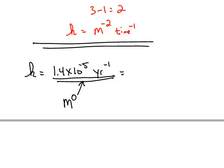So we can rewrite this given rate constant as 1.4 times 10 to the negative 5th molarity to the 0 years to the negative 1.